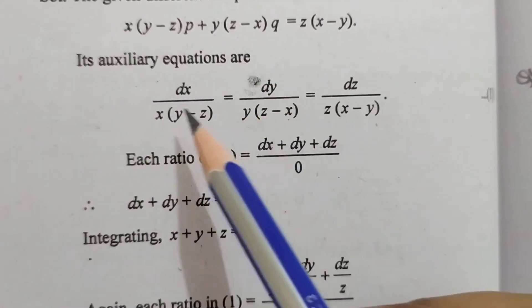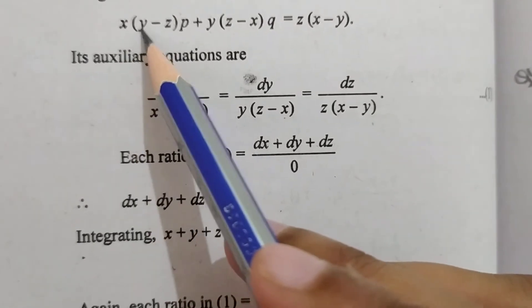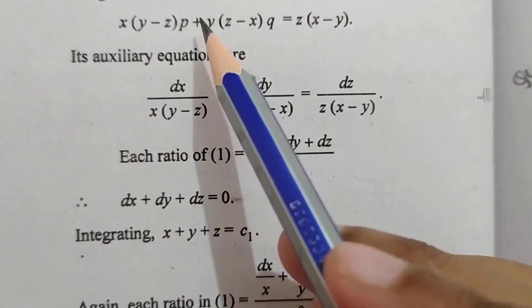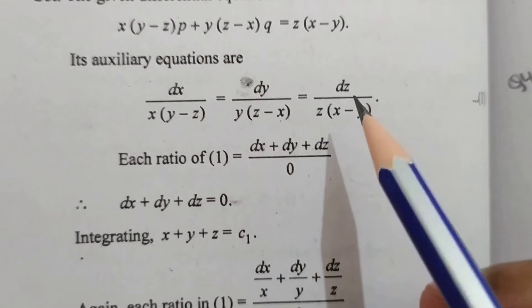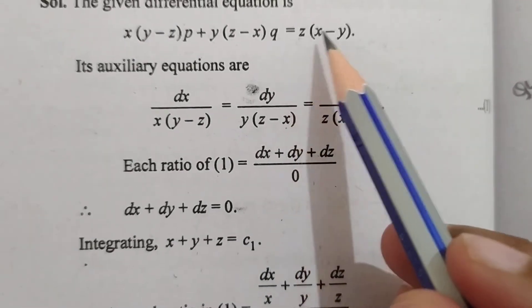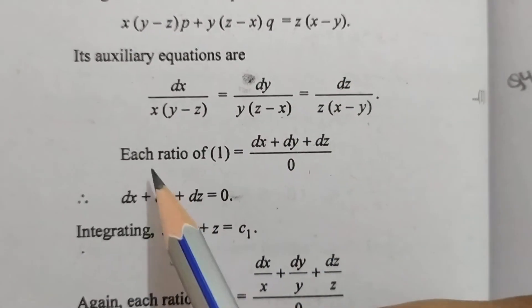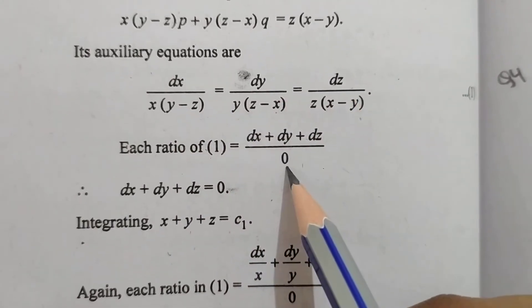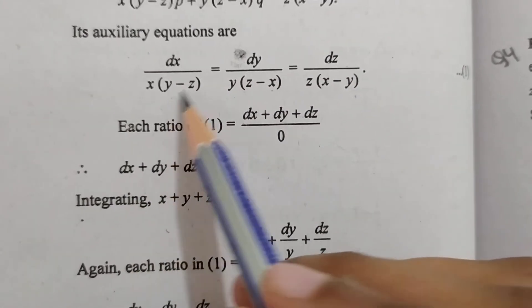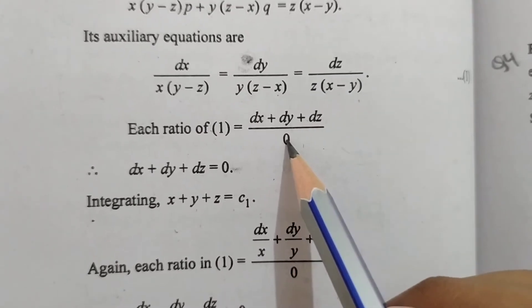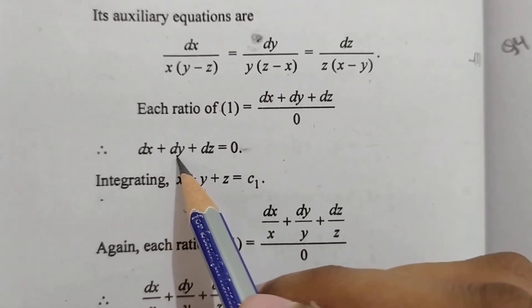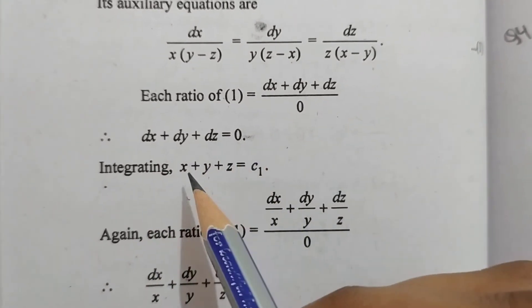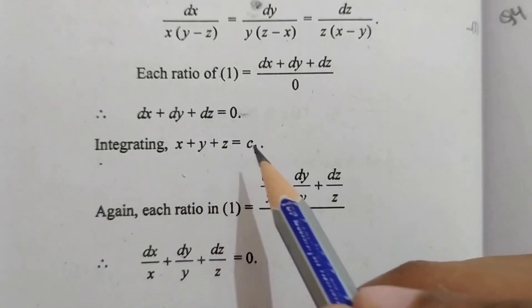Its auxiliary equations are dx/(x(y-z)) = dy/(y(z-x)) = dz/(z(x-y)). Each ratio of 1 is (dx+dy+dz)/0. Solving, the denominator equals zero, so dx+dy+dz=0. Integrating, x+y+z=c1.